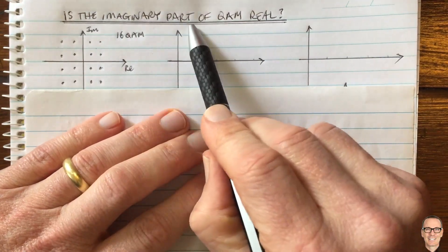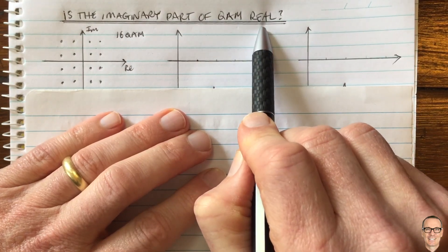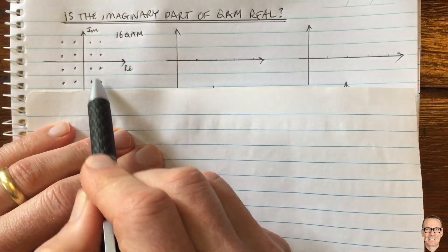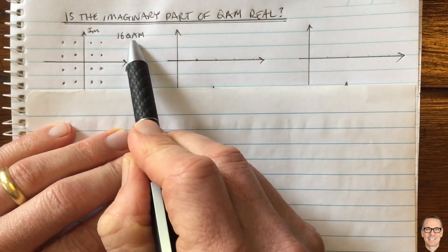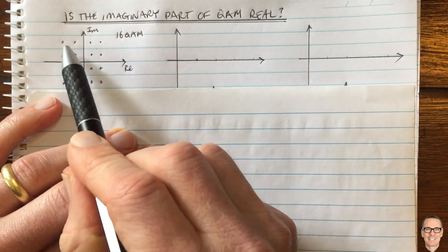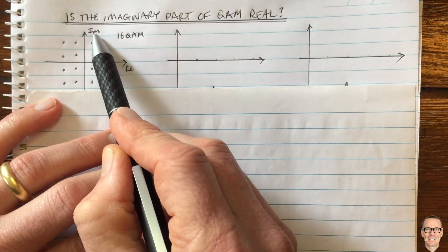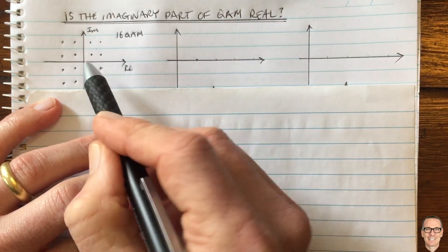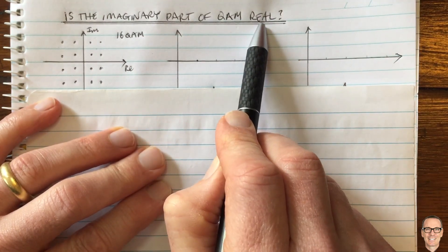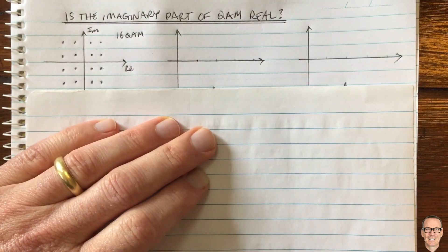Is the imaginary part of QAM modulation real? This is a natural question because in QAM — here we show a 16 QAM constellation, quadrature amplitude modulation for digital communications — there are 16 points and two axes: the real axis and the imaginary axis. So it's common to ask: what is the imaginary axis, and is it real?